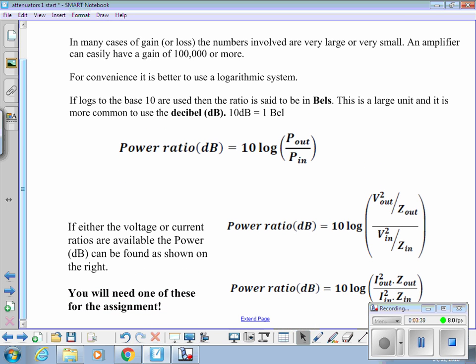If you know the voltage or the current ratio, you can get the power ratio by substituting in for P_out and P_in. We know we can get the power from V_out squared divided by Z_out, so we substitute that in for P_out, substituting V_in squared over Z_in for P_in, and we can get the power ratio. That's the formula you're going to need for your assignment to get your voltage ratio converted to power in decibels for the online calculator.